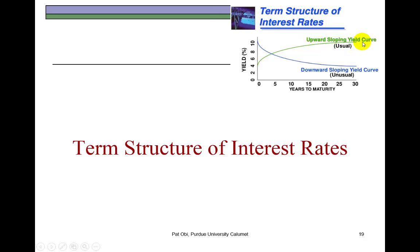If on the other hand the yield to maturity — which is actually the market interest rate on the bond — drops with rising maturity, then we have a downsloping yield curve, or a downward sloping yield curve.